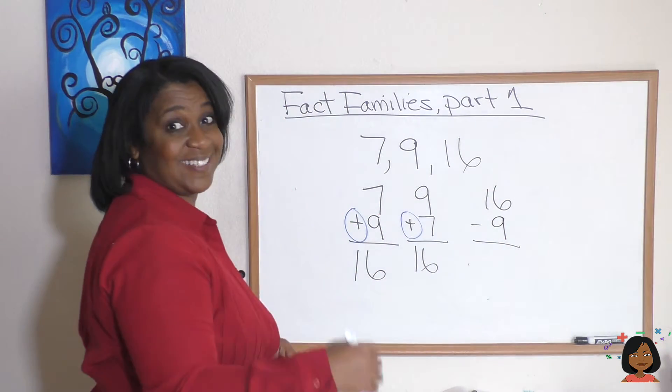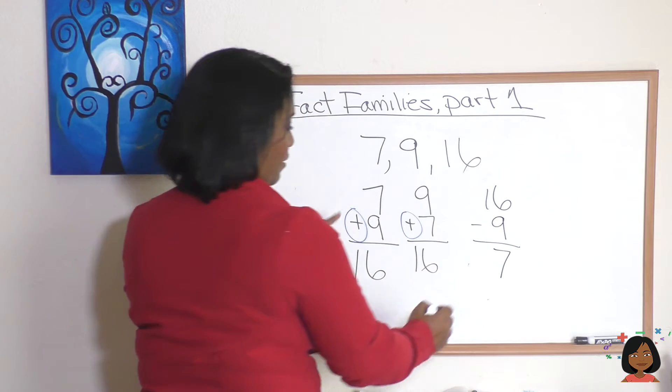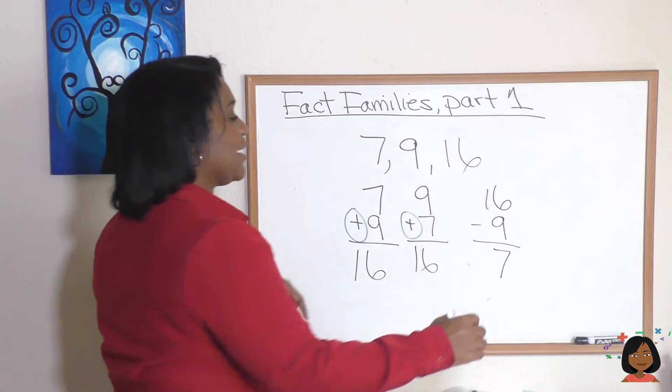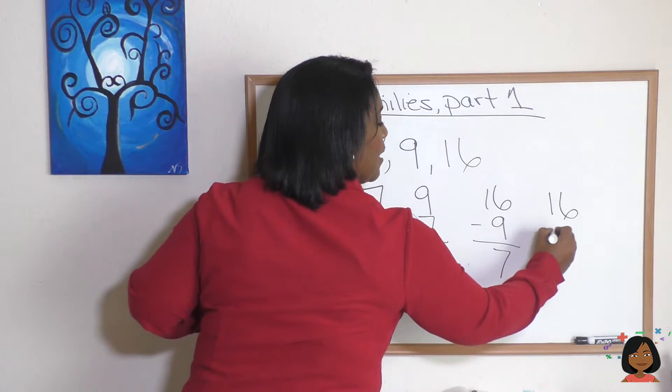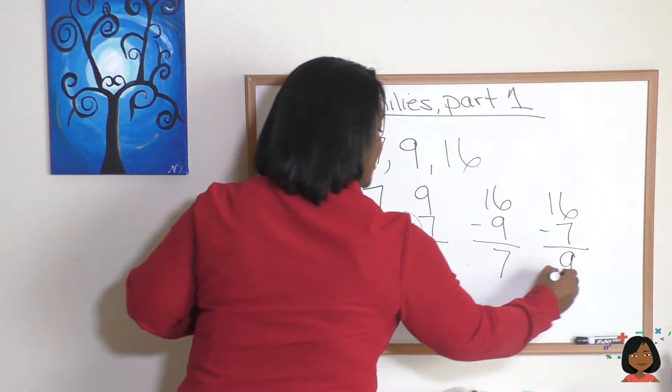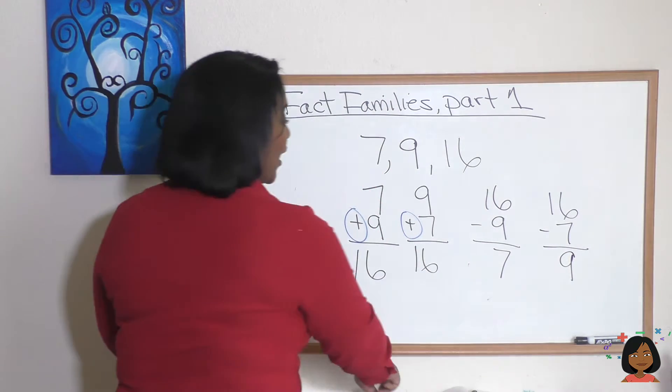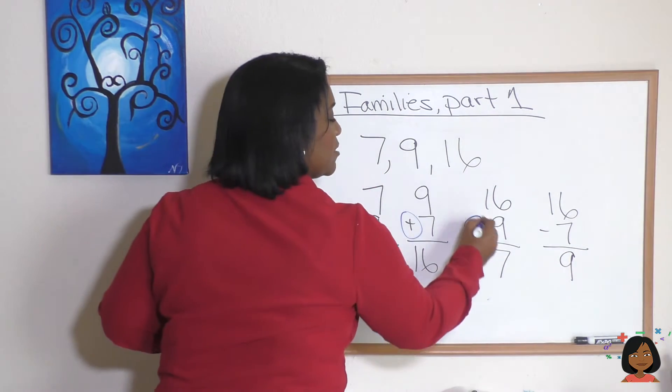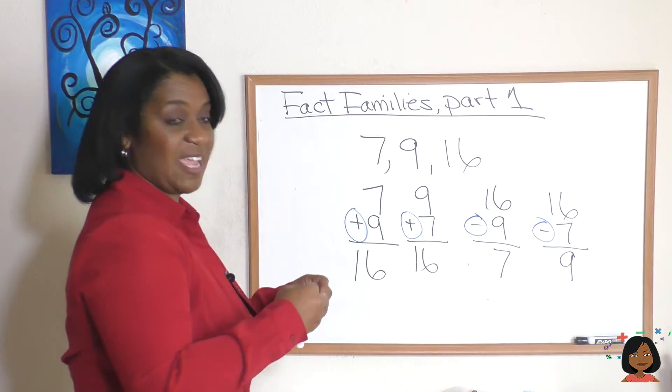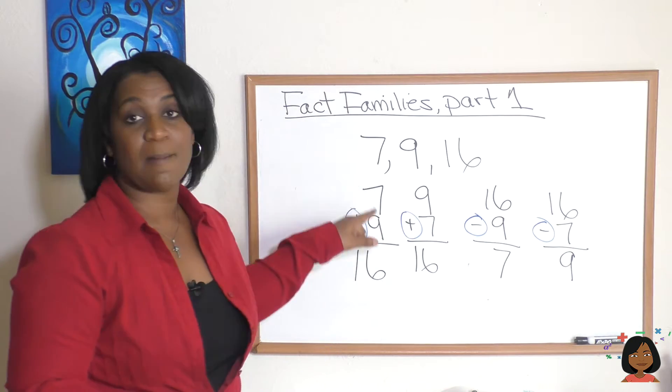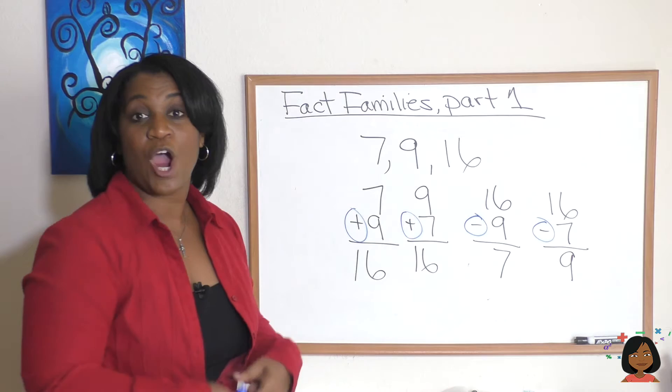16 minus 9 is 7. Oh look at that. Let's try the other addend. 16 minus 7 is 9. So look I got two addition statements and two subtraction statements that shows how these numbers 7, 9 and 16 are related and that's what's called a fact family for addition and subtraction.